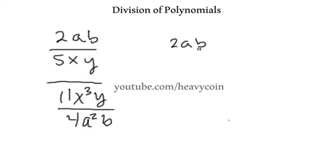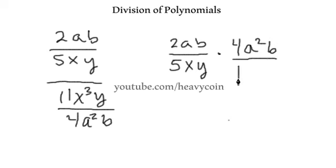So I'm going to write 2ab over 5xy times, now we're going to take this and flip this so this becomes 4a squared b over 11x cubed y.